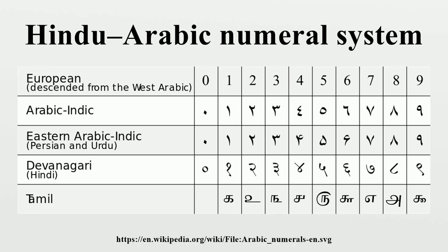Adoption in East Asia: In China, Gautama Siddha introduced Hindu numerals with zero in 718, but Chinese mathematicians did not find them useful, as they already had the decimal positional counting rods. In Chinese numerals, a circle is used to write zero in Suzhou numerals. Many historians think it was imported from Indian numerals by Gautama Siddha in 718, but some Chinese scholars think it was created from the Chinese text space filler. Chinese and Japanese finally adopted the Hindu-Arabic numerals in the 19th century, abandoning counting rods.